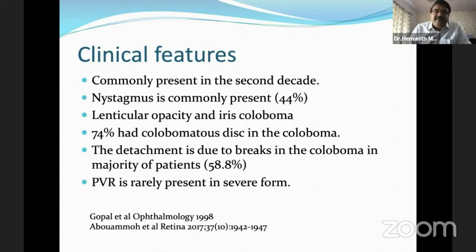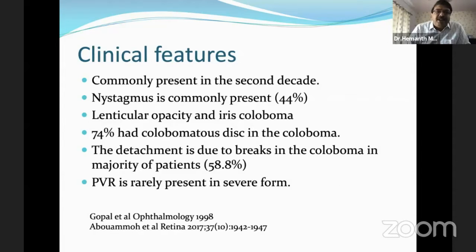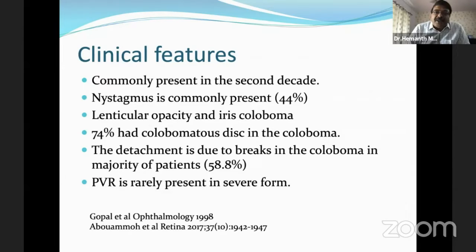It's commonly seen in the second decade. Most patients have other features like nystagmus, seen in about 44% of patients. There is also a possibility of lenticular opacities and iris coloboma. About 74% of patients also have a colobomatous disc within the coloboma. Detachments due to breaks in the coloboma are seen in the majority of patients — about 58.8% — and PVR is rarely present in this condition.